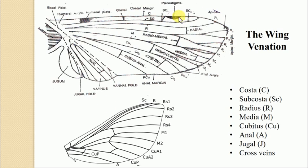The costa is a convex vein and may sometimes bear a stigma, as seen on the fore and hind wings of Odonatan insects — referred to as pterostigma. However, pterostigma is not always present in all insects; it is found in insects belonging to the order Odonata, and in the four wings of Hymenoptera, Coleoptera, and Mecoptera. This is about the first vein, the costa, designated by capital C.